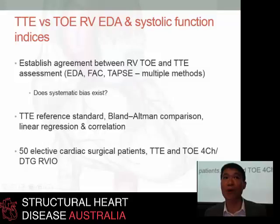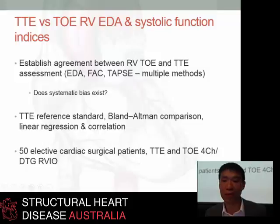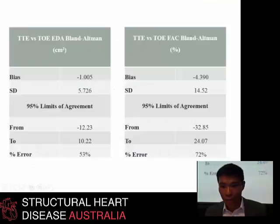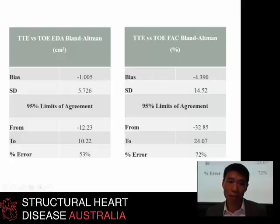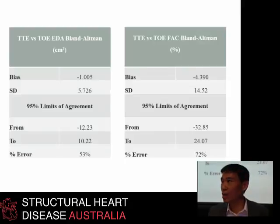We also looked at different proposed methods of measuring TAPSE which have not been validated by TOE, by different views — the deep transgastric RV inflow-outflow view, and also doing single measurements from the lateral annulus to the apex. Using Bland-Altman comparison and some linear regression to look at how the measurements track, unfortunately the correlation was very poor. The bias was very small between the different methods, which implies that there isn't really any systematic underestimation or overestimation, but rather that there is an inconsistent means by which TOE has a different scanning plane relative to transthoracic in each patient.